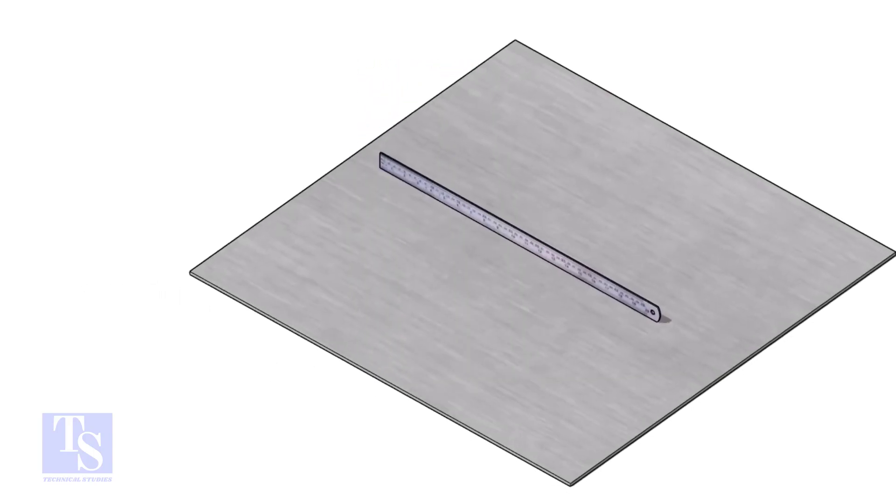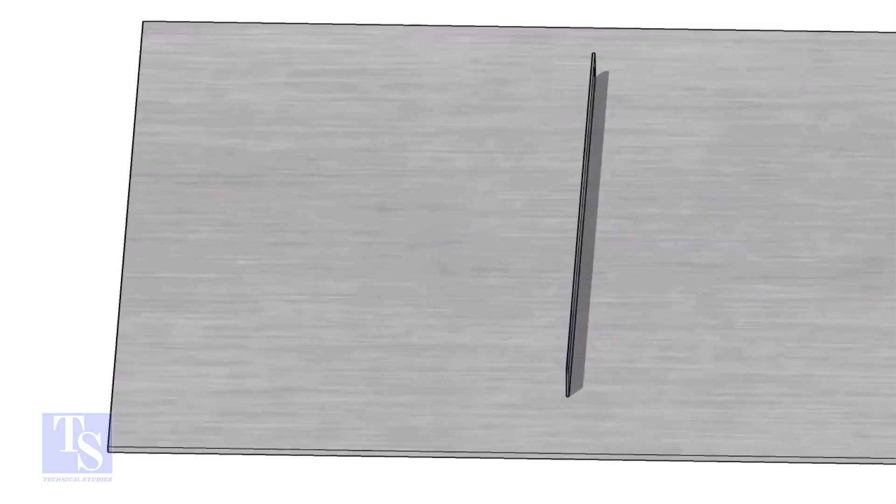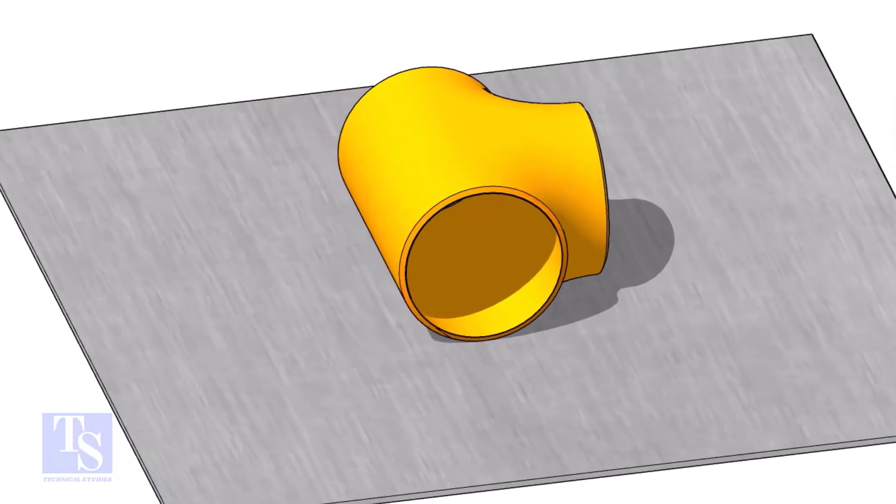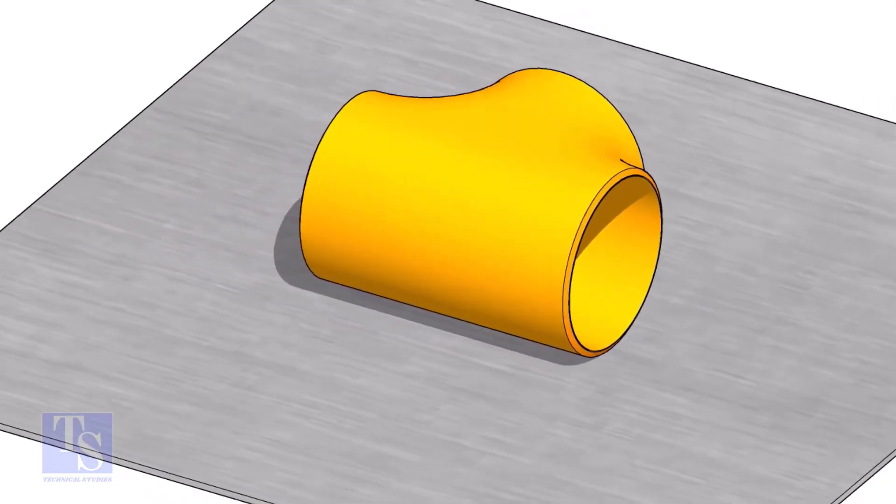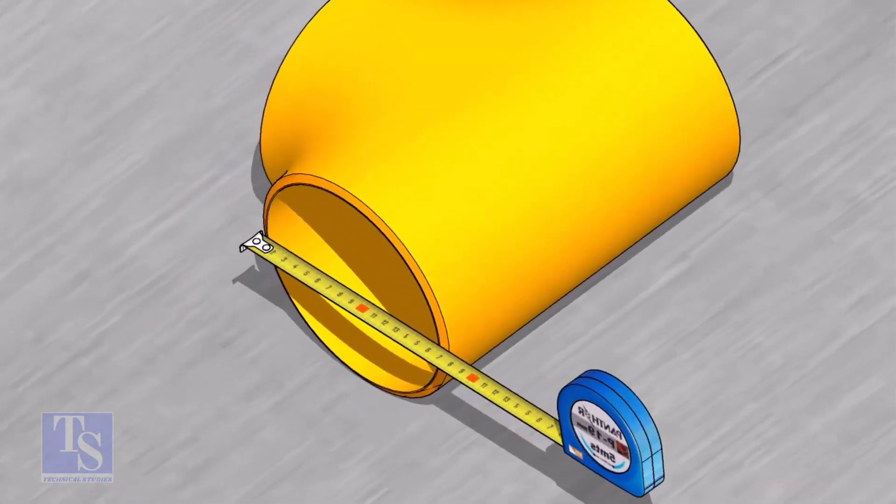Choose a straight plate and put the tee on it. Check the outer diameter of the tee. In this case, the diameter is 168 mm.